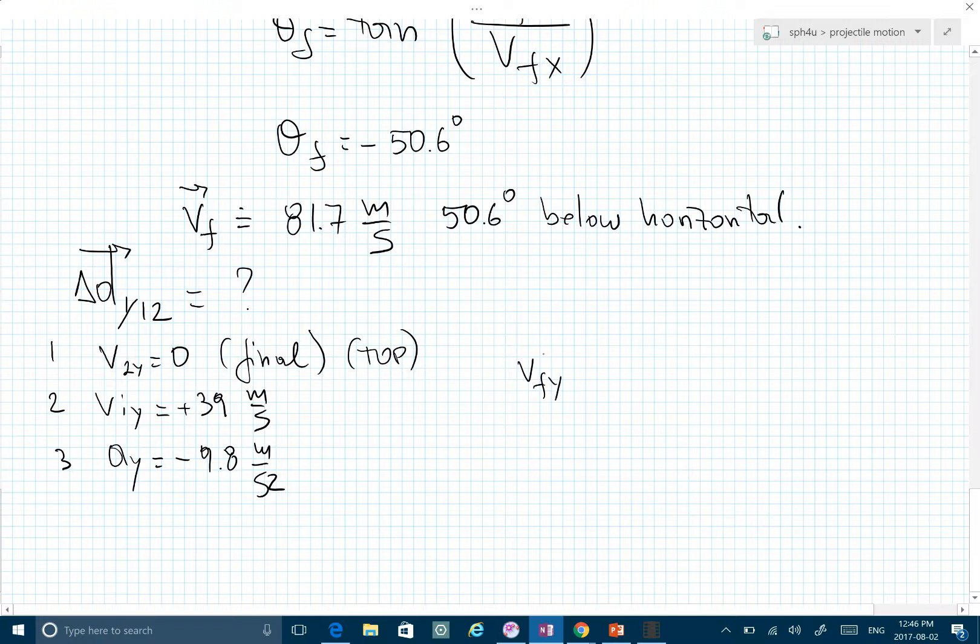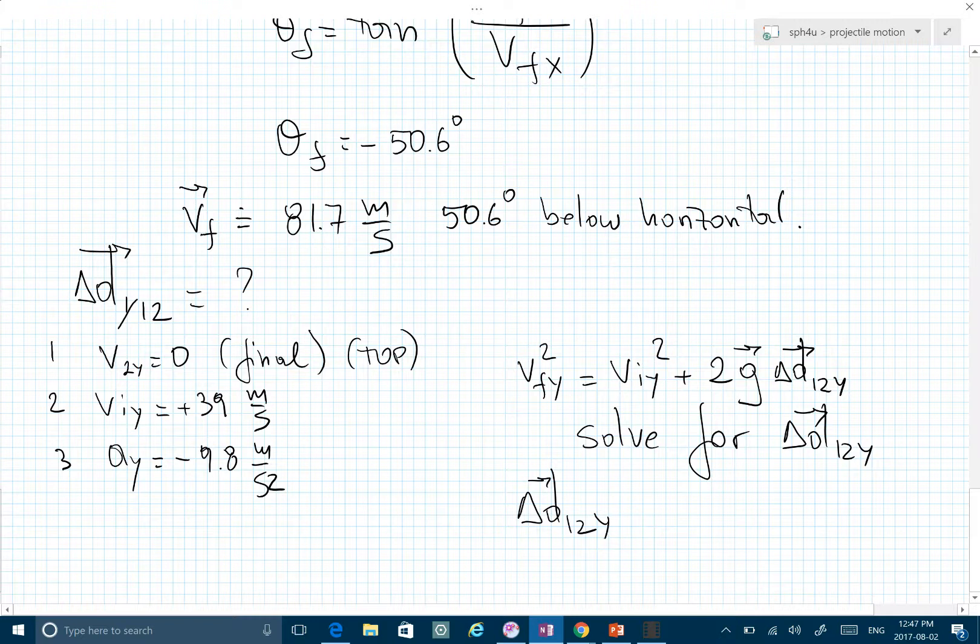VFY squared equals VIY squared plus 2 times the acceleration times the displacement. We solve for Delta D Y from 1 to 2: Delta D Y equals VFY squared minus VIY squared divided by 2 times the acceleration.